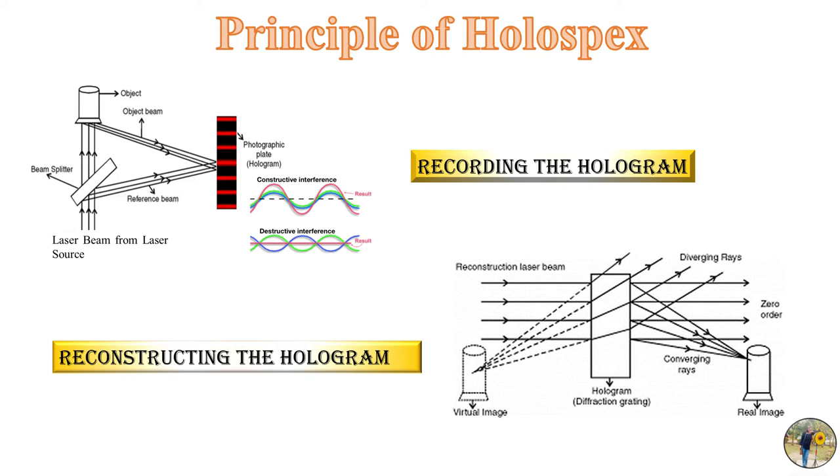Now in order to reconstruct the image from the hologram, since the hologram contains the interference pattern we need to decode the interference pattern to get the image. So for this we are using the laser beam, same laser beam that we used during the recording of this hologram.